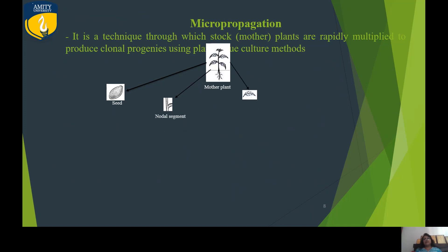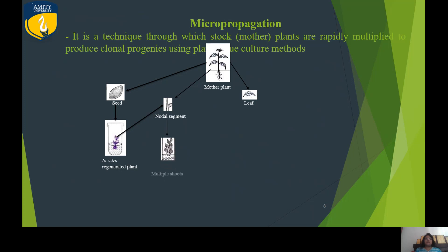Taking seeds, nodes, or leaf sections, we can produce plants in very good condition. In vitro regenerated plants go through shoot proliferation, then multiple shoot proliferation, then rooting, then hardening, and finally we get field-acclimatized plants. The other area is indirect organogenesis through callus production.